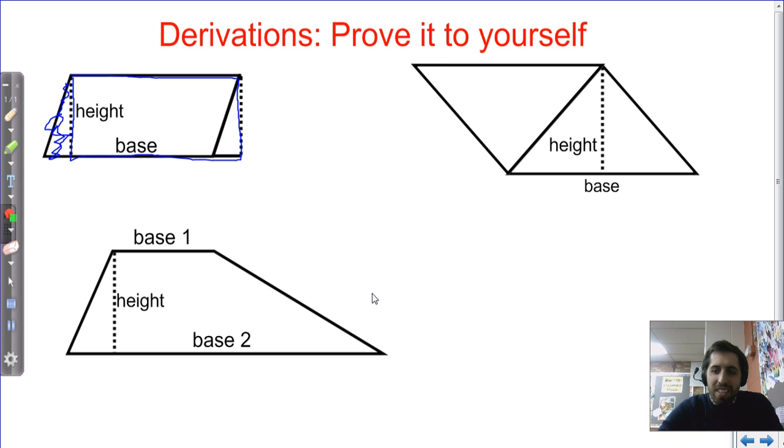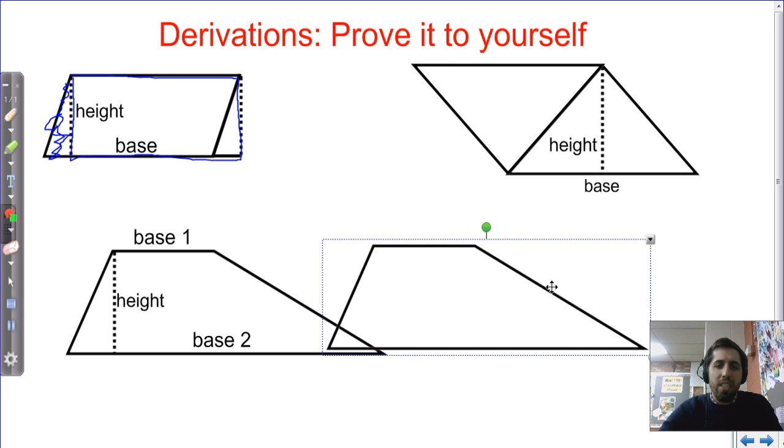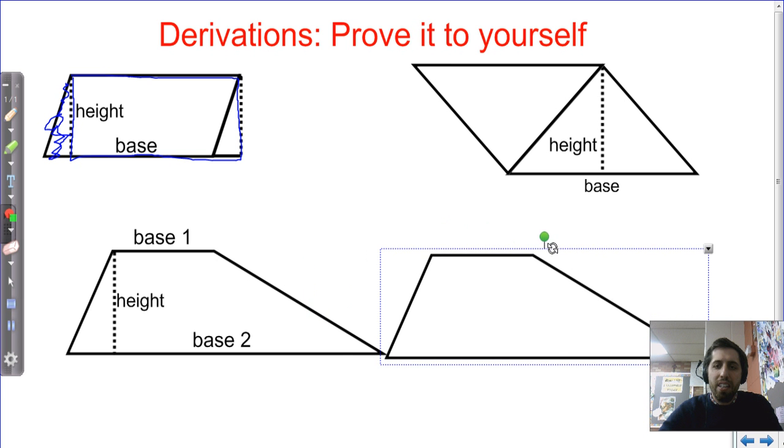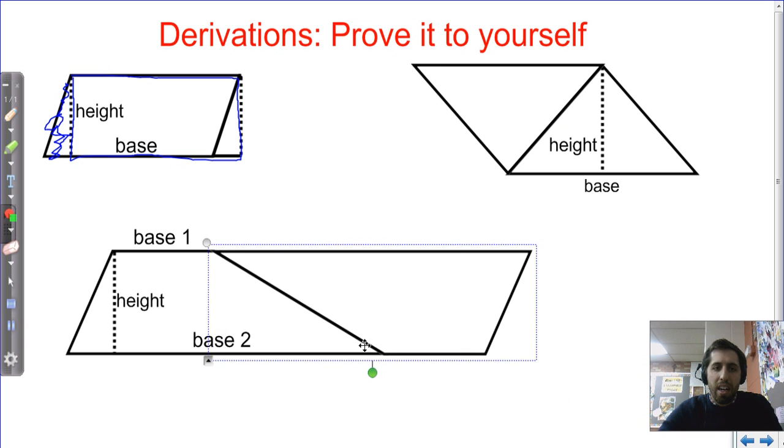Now we're going to do something very similar, and I'll give you that warning. We're going to do something very similar here. See if you can figure this one out. How are we going to find the area of a trapezoid where the bases are different? We have a height. We have two side lengths. Do we use either of those side lengths? What do we do? Well, again, if we double it, make a copy, flip it, and connect, now we have a parallelogram.